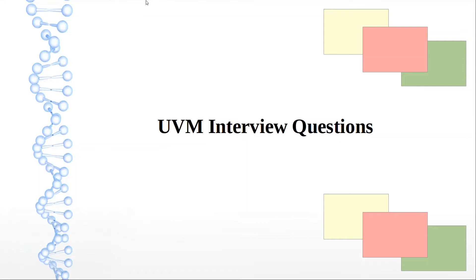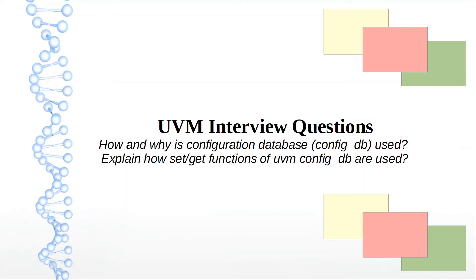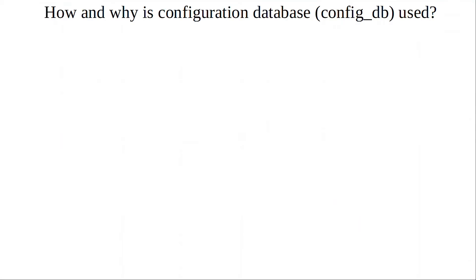Hey guys, it's Ken again with another set of UVM questions. This is the second part to the config_db series. In this particular video, I'll be covering how and why a configuration database is used, and how the set and get functions — which are the main functions of a UVM config_db — are implemented, what the parameters are, and what kind of arguments we provide. Let's jump right into it.